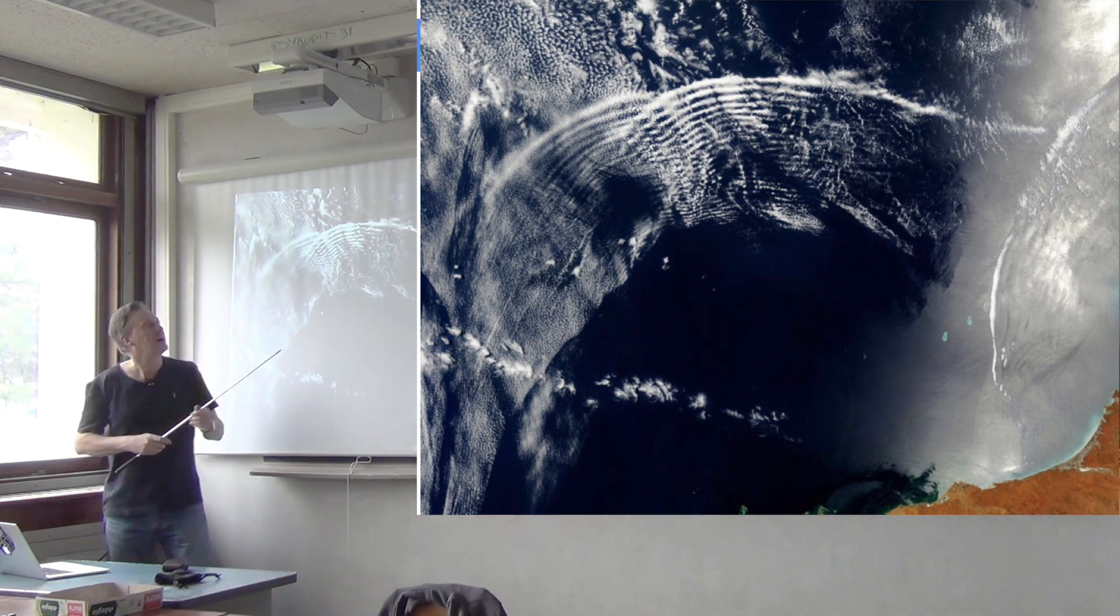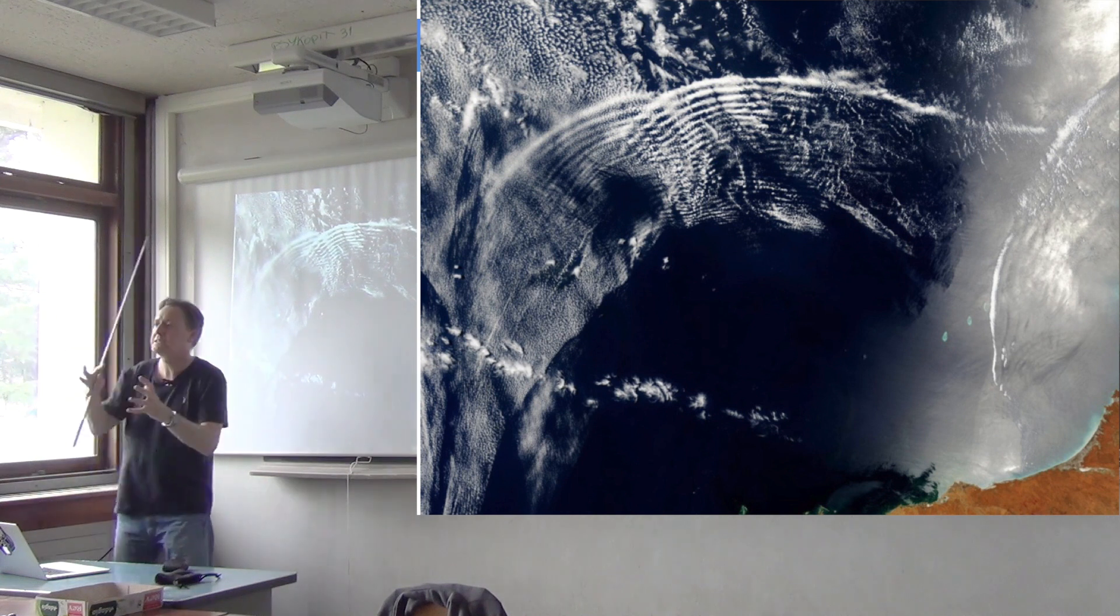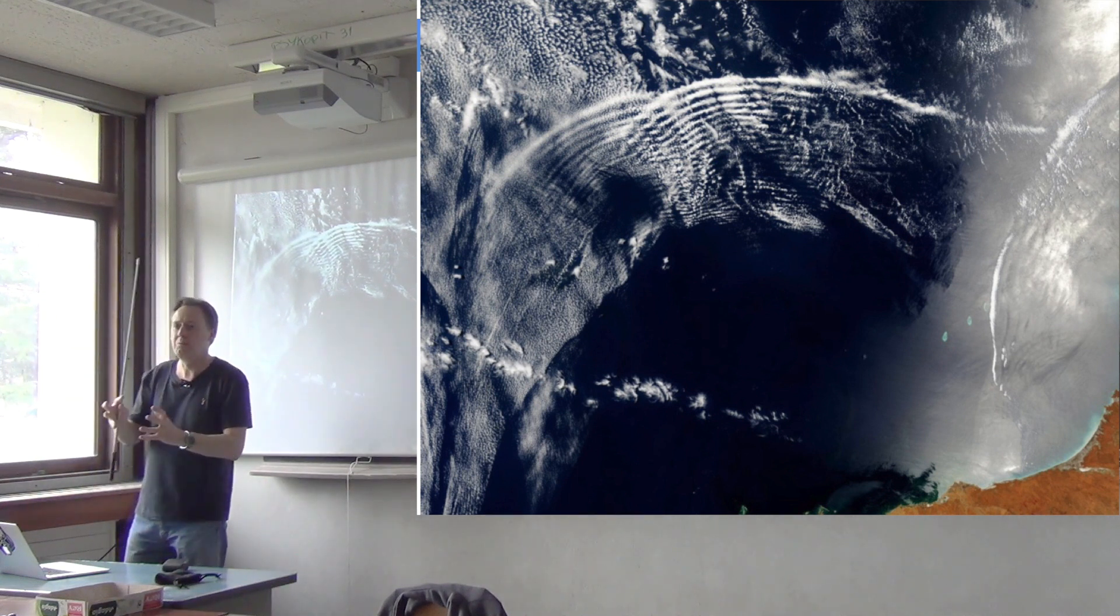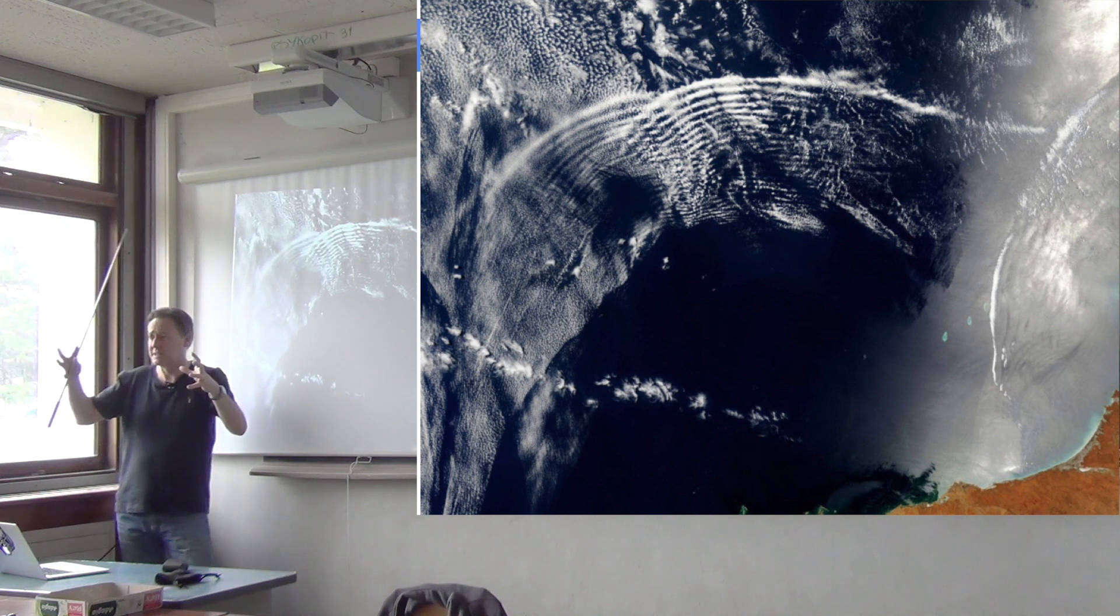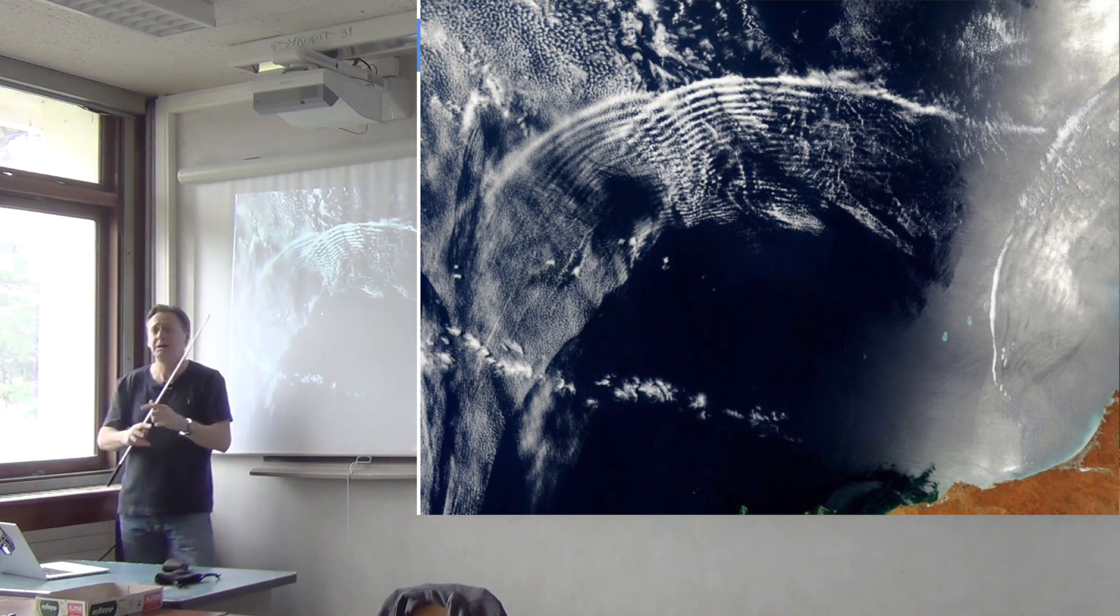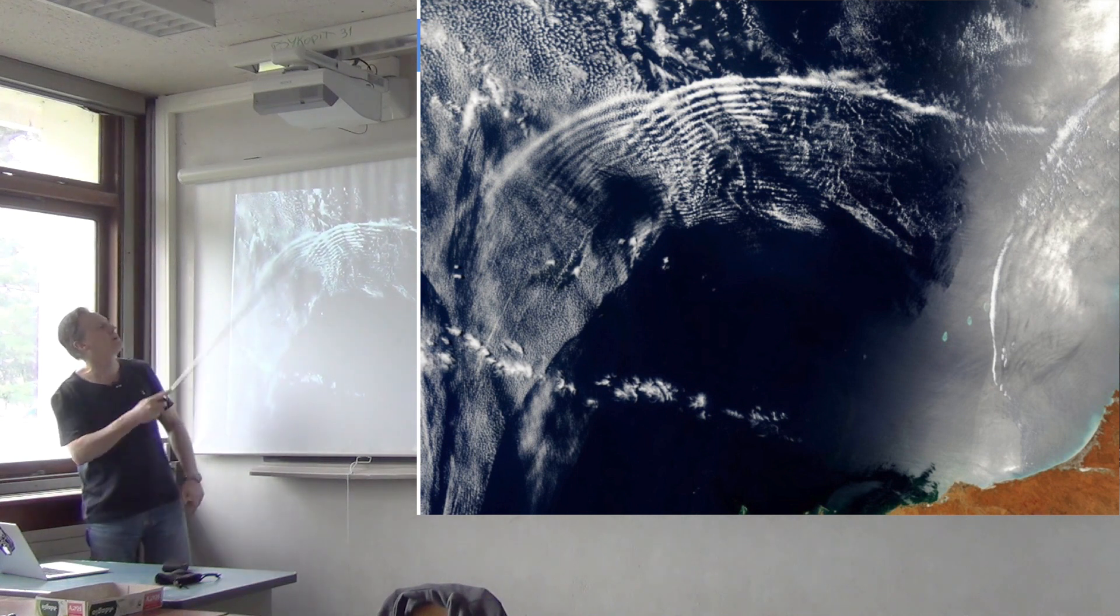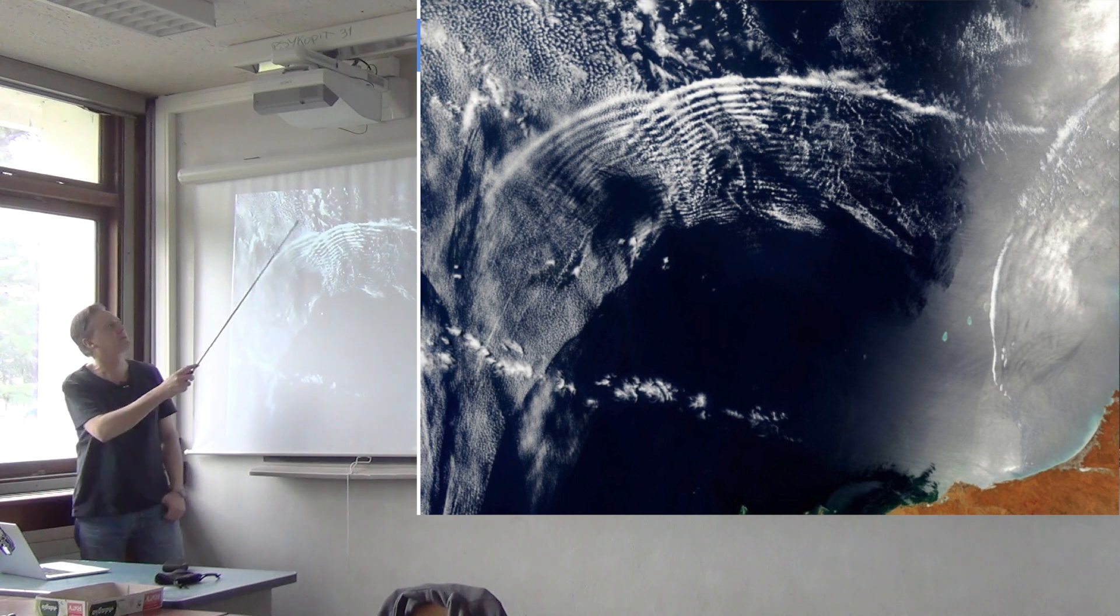All right? Where the air is going down, it gets compressed adiabatically. It gets warmer, so if you have liquid water in that parcel of air, it will evaporate, and you'll get clear sky. All right? So if it's rippling up and down like that, the clouds will show you where the crests and the troughs are in your internal waves.